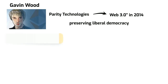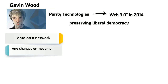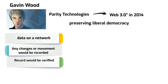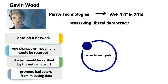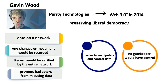Instead of being stored on servers as it is now, the data that makes up the internet would be stored on the network. Any changes to or movement of that data would be recorded on the blockchain, establishing a record that would be verified by the entire network. In theory, this prevents bad actors from misusing data. A blockchain-centric internet would make it harder to manipulate and control data, since data would be decentralized and no gatekeeper would have control of it, meaning they couldn't bar anyone's access to the internet.